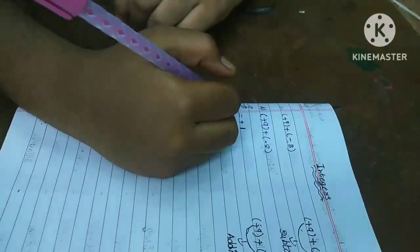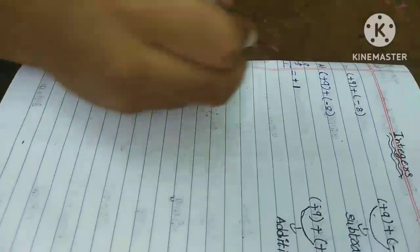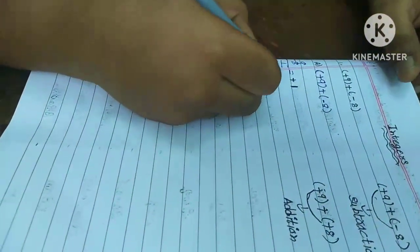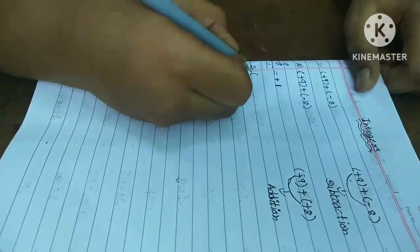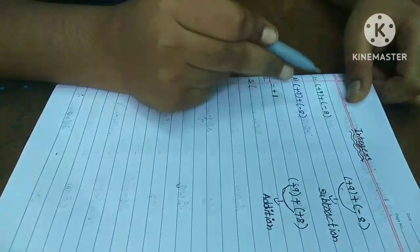You understood now friends? Now, I will say under like. See friends. Now, plus 9 plus of minus 8. No?